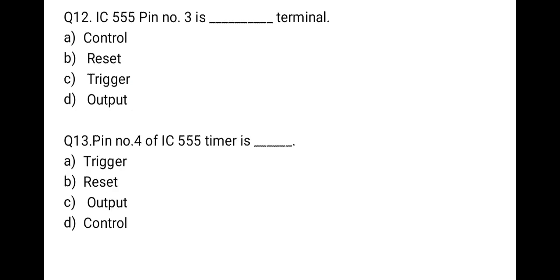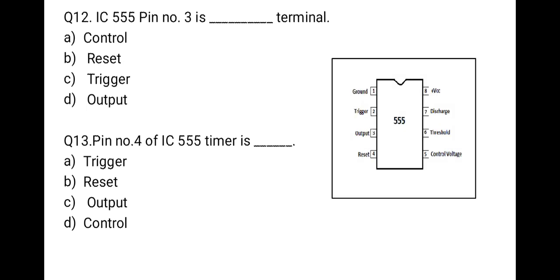The next question: IC 555 pin number 3 is which terminal? Options: control, reset, trigger, or output. From the pin diagram of IC 555: pin 1 is ground, pin 2 is trigger, pin 3 is output, pin 4 is reset, pin 5 is control voltage, pin 6 is threshold, pin 7 is discharge, and pin 8 is VCC. So pin number 3 is the output. Correct option is D.